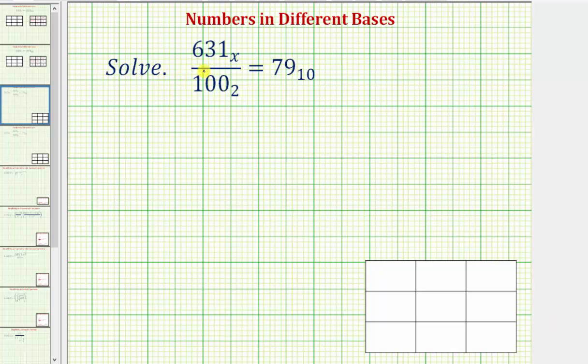We want to solve the equation 631 base x divided by 100 base 2 equals 79 base 10, or as we normally say 79.